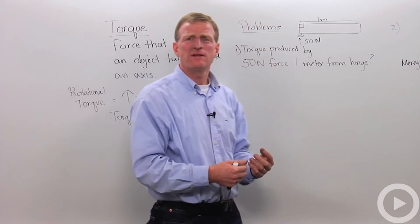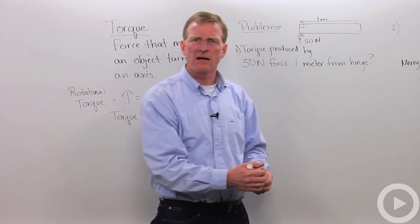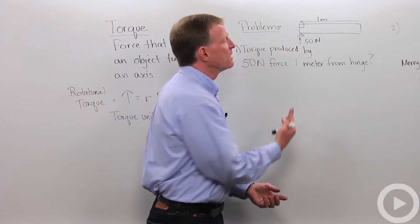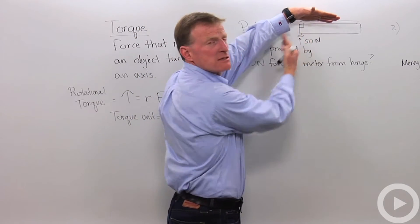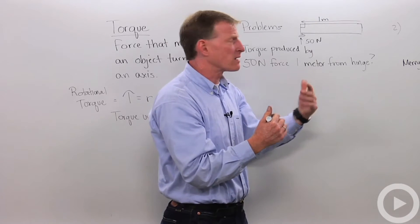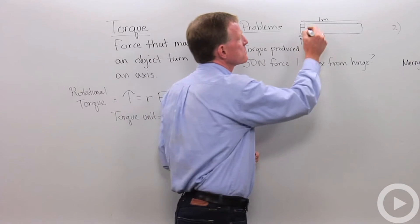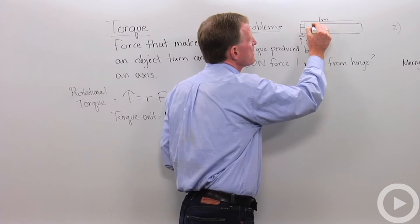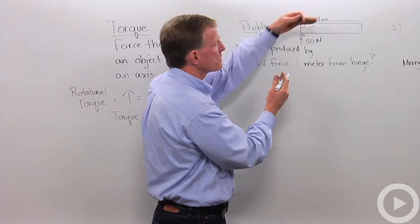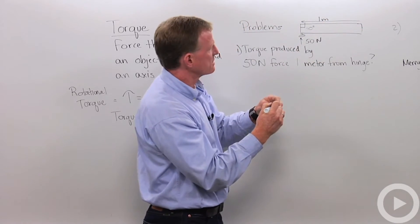Let's say I'm applying 50 newtons to open the door, and when I apply that I'm applying it directly perpendicular to the hinge. So the angle, what would be my angle there? Well that would be 90 degrees. So that's going to be the angle of the force relative to the central axis.